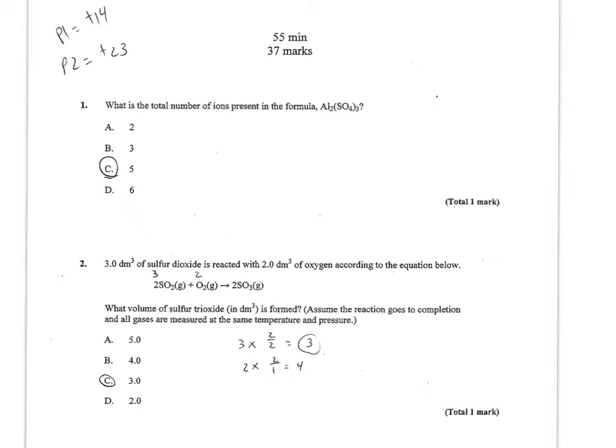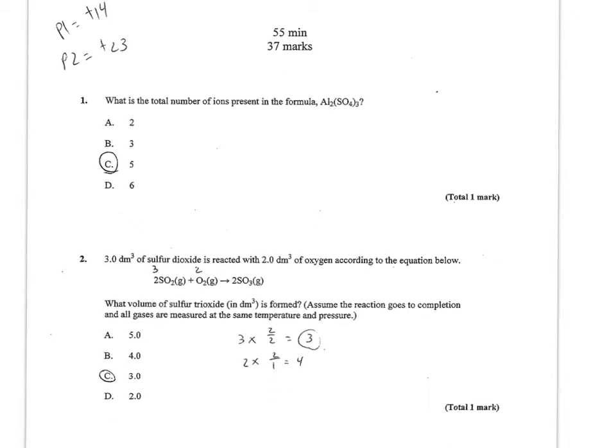Starting with the multiple choice, question 1 wants to know, what is the total number of ions present in the formula, Al2(SO4)3? They're not asking how many ions are in a mole, just how many ions are here. Al is one ion, it forms a +3 ion, and SO4, sulfate, is my other ion at -2. So that means I have a total of 2 plus 3, or 5 ions being represented by that formula.